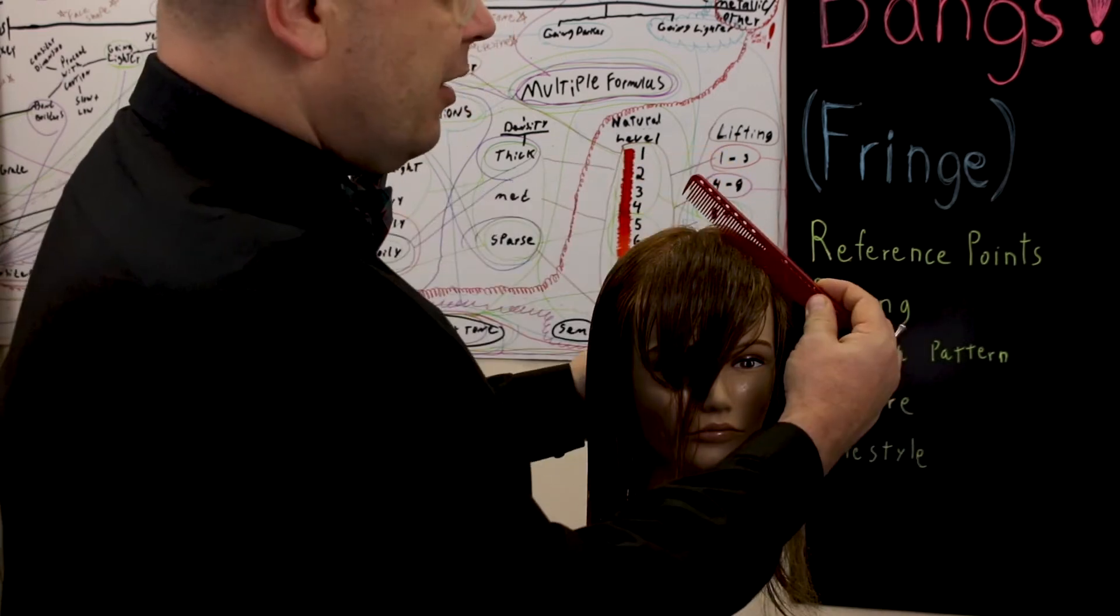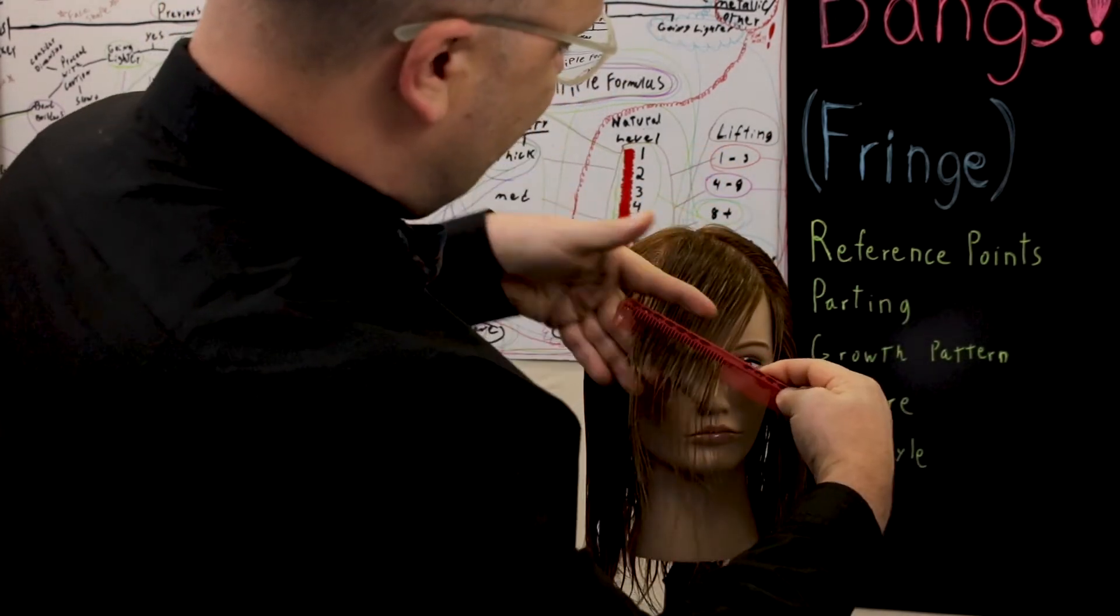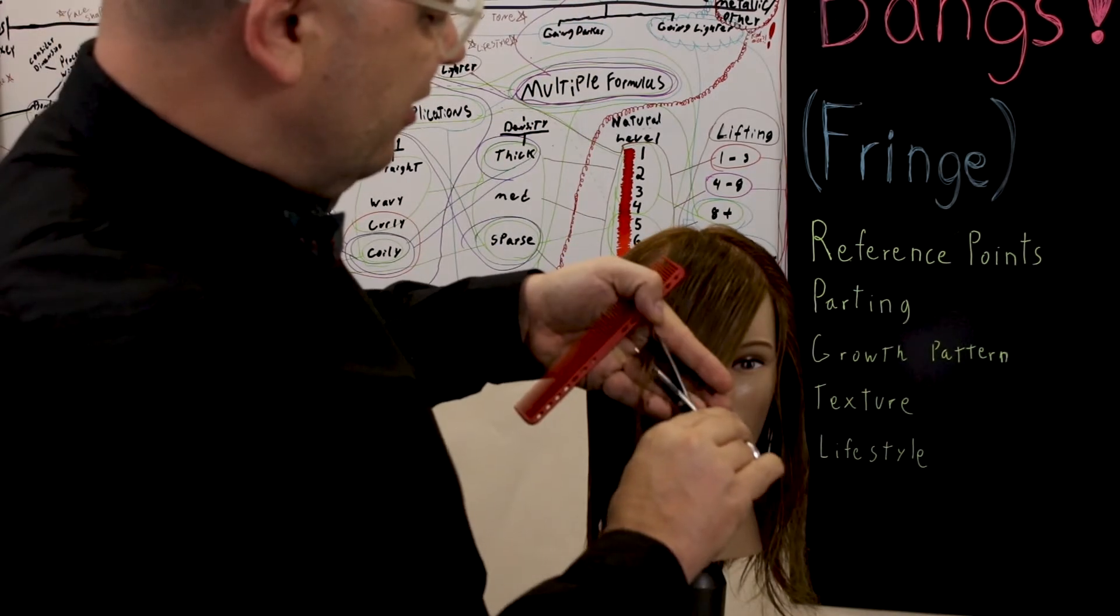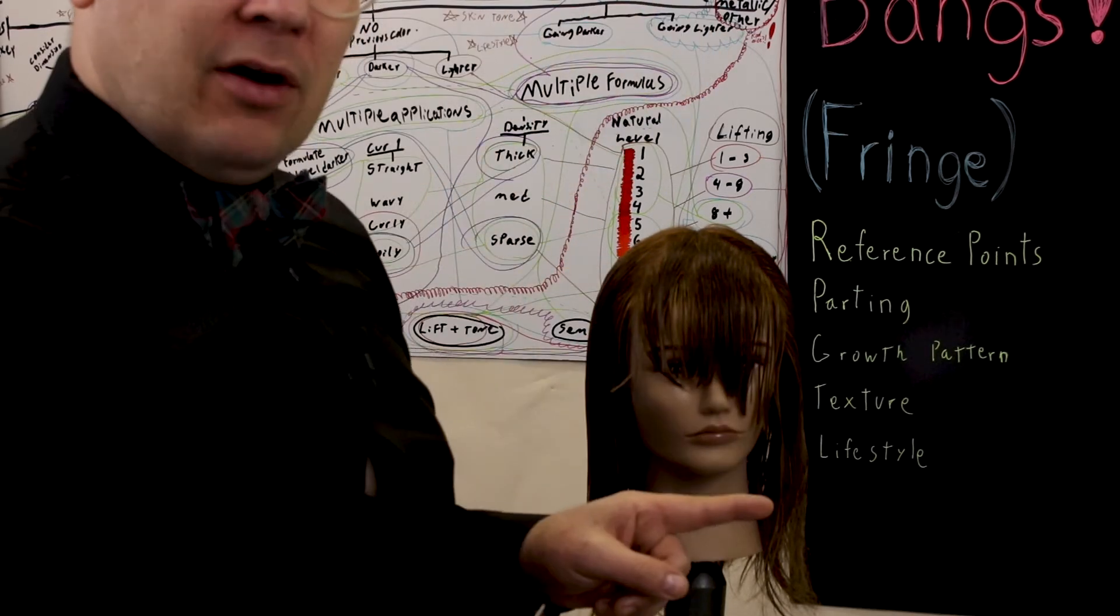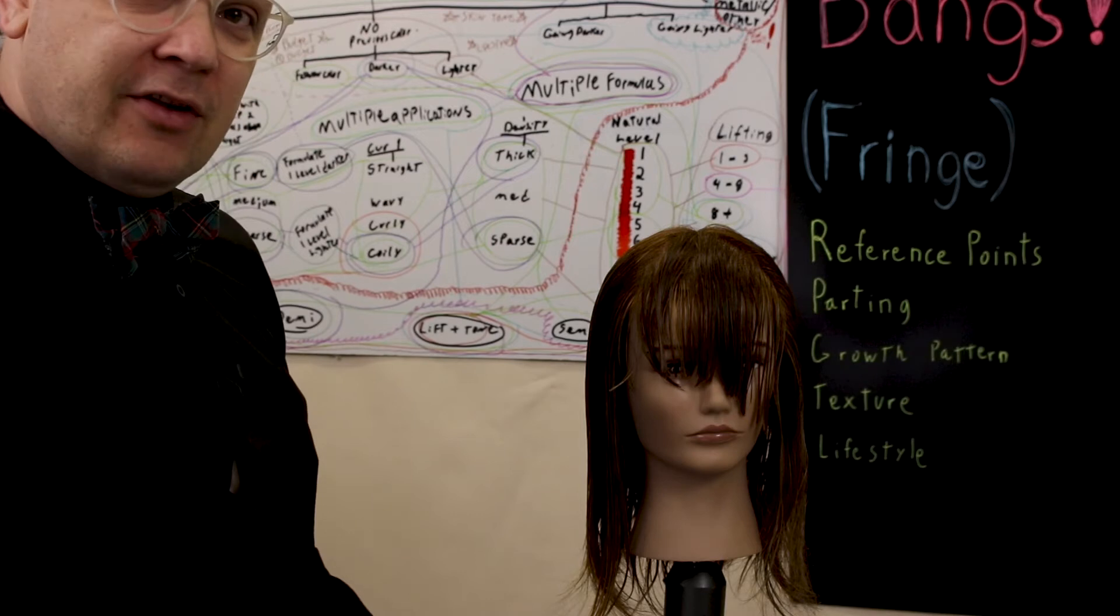I'm going to pull the hair perpendicular to this line right here that I just created. That is very similar to that last set of bangs that we cut. That would be our classic side bang right there. However, she's not interested in a classic side bang. She wants to be able to part it to the other side as well.